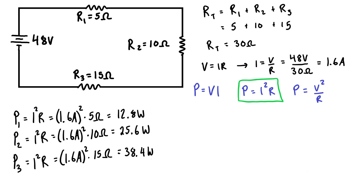Now that we have the power consumed by each resistor, we find the total power consumed by the circuit. For series or parallel resistors, it's just the sum of all individual elements: P_total equals P1 plus P2 plus P3. Adding 12.8 plus 25.6 plus 38.4 gives us 76.8 watts total power consumed.